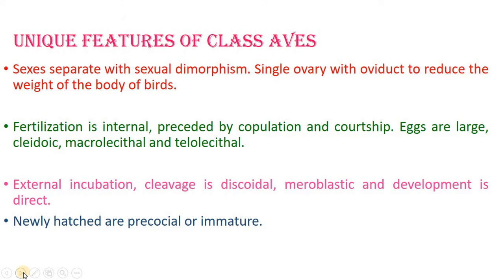The sexes are separated with sexual dimorphism. There is a single ovary with oviduct to reduce body weight — unlike in mammals and reptiles which have two ovaries — and this is also relevant to flight adaptations. Fertilization is internal, preceded by copulation. Eggs are large and cleidoic, covered by calcareous shells. Eggs are macrolecithal or megalecithal — meaning they contain a large quantity of yolk.